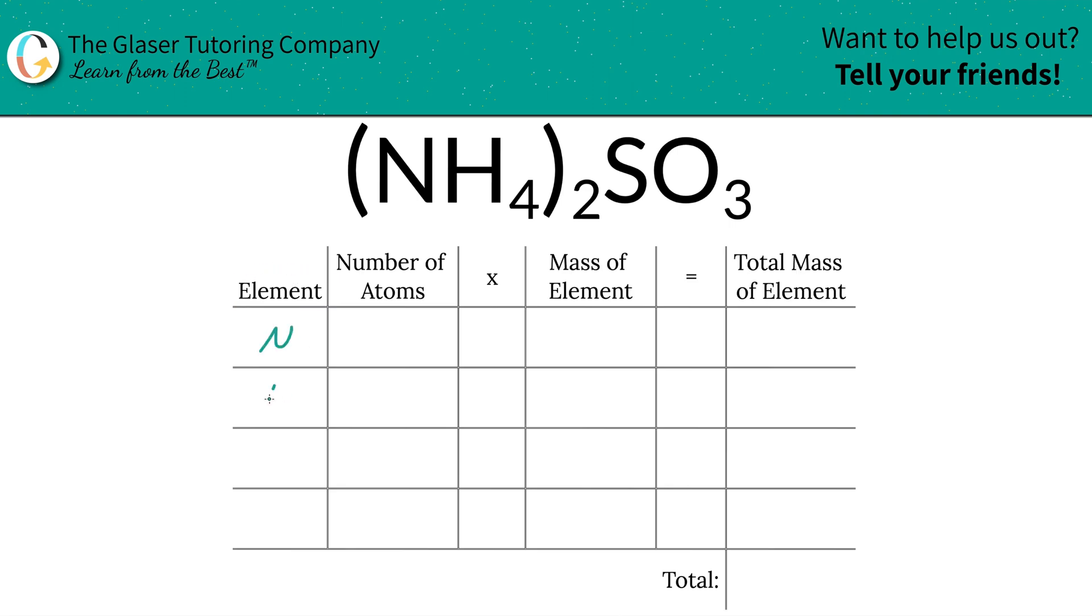Bam. So the first step of the process is we're going to write down the elements we have in the compound, so nitrogen, hydrogen, sulfur, and oxygen.